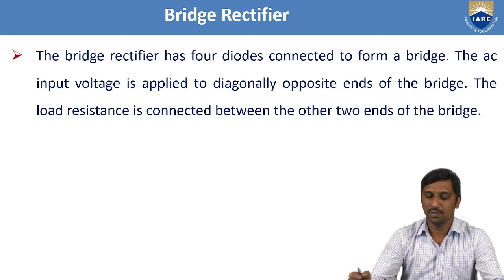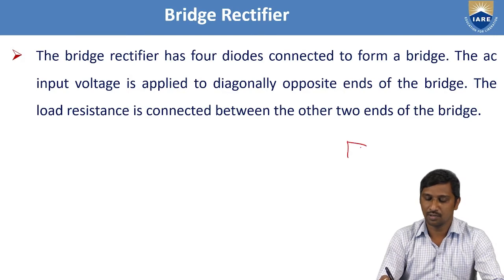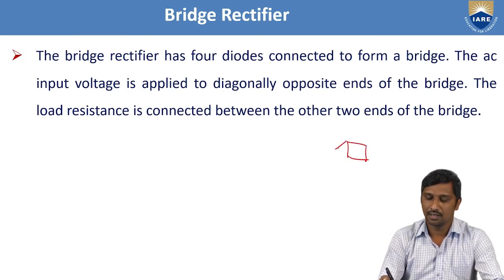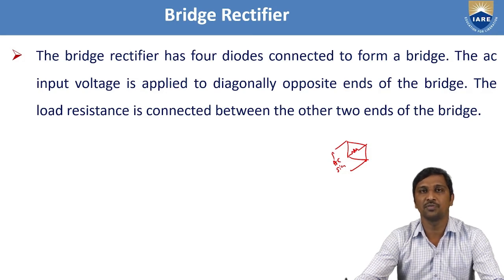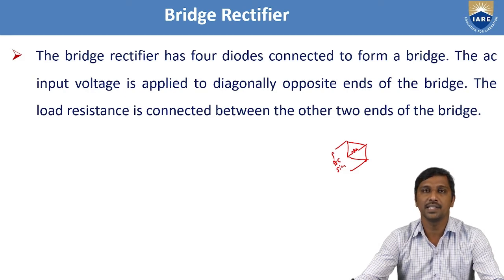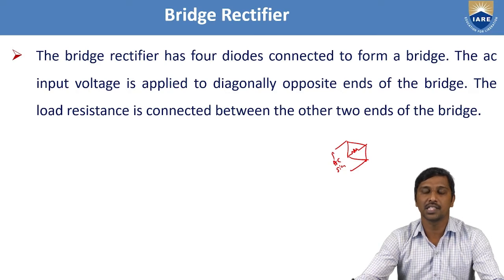If you form the bridge, it looks like a diamond circuit. Taking it diagonally, we apply the AC signal at two ends, and place the load resistance at the other two ends. By using these four diodes, we form the bridge rectifier circuit to process the AC signal to the pulsating DC signal, using the step-down transformer.